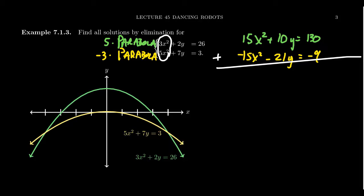The reason we adjusted the coefficients this way is that the 15x² terms are going to cancel out. I chose 5 and -3 to construct a common multiple for the x² coefficients, making sure their coefficients were opposite in sign but equal in value.